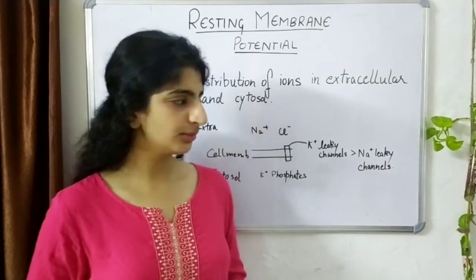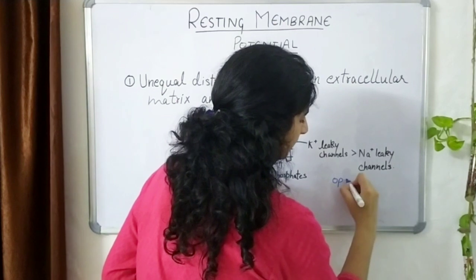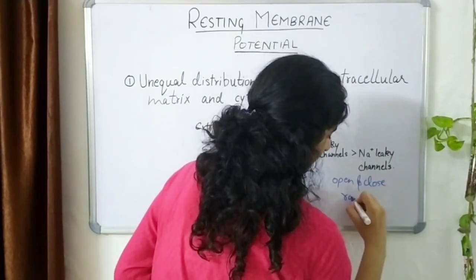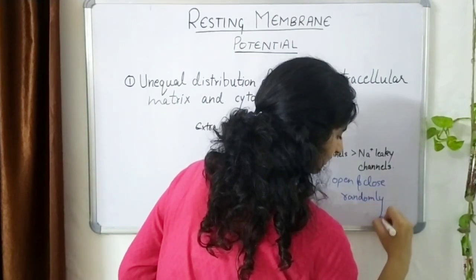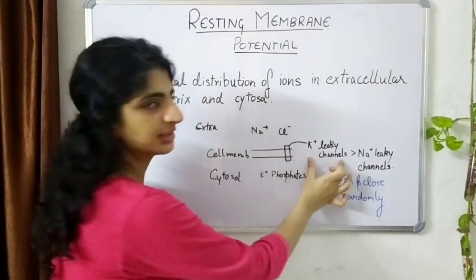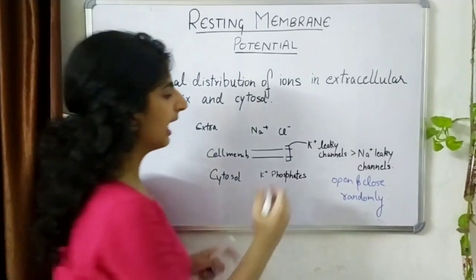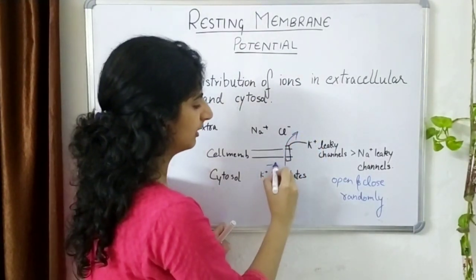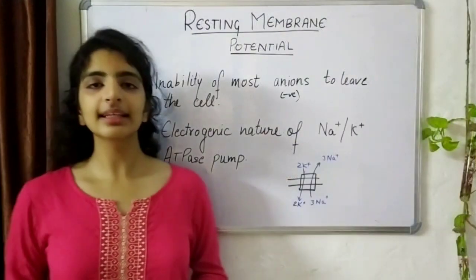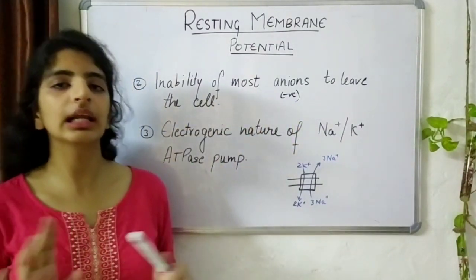Leaky channels are channels present on the membrane that open and close randomly — they don't need any external stimulus. So more K⁺ ions can move out of the cell, making the inside considerably more negative than the outside. The second factor is that most anions of the cell are not allowed to leave it.